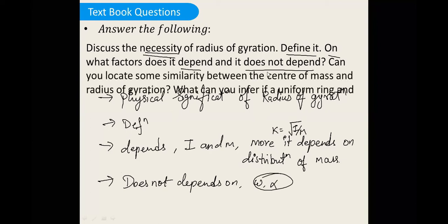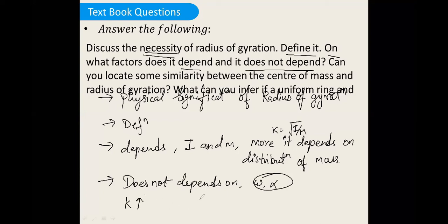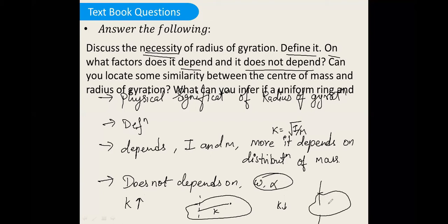Can you locate some similarity between center of mass and radius of gyration? Yes, we can. The perpendicular distance between the center of mass and the axis of rotation is called the radius of gyration. If the radius of gyration is more, that means the center of mass is very far away from the axis of rotation. So this k value defines the distribution of mass.